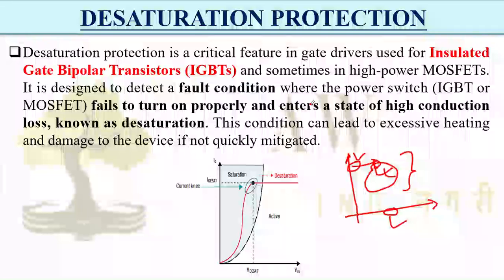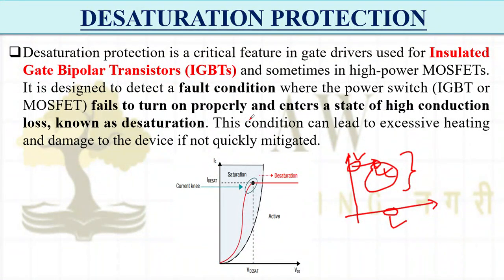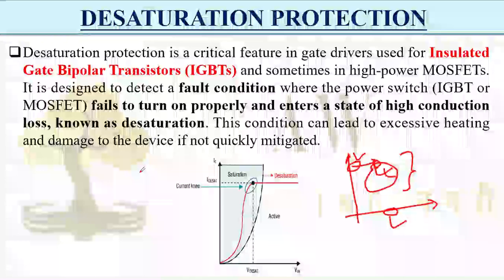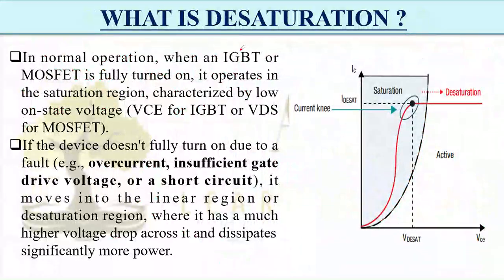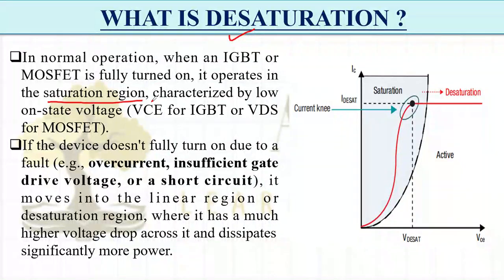This protection will not allow the device to go into the active region, where very high conduction losses occur. So desaturation protection prevents this. In normal operation, when an IGBT or MOSFET is fully turned on, it is operating in the saturation region, characterized by a low on-state voltage.